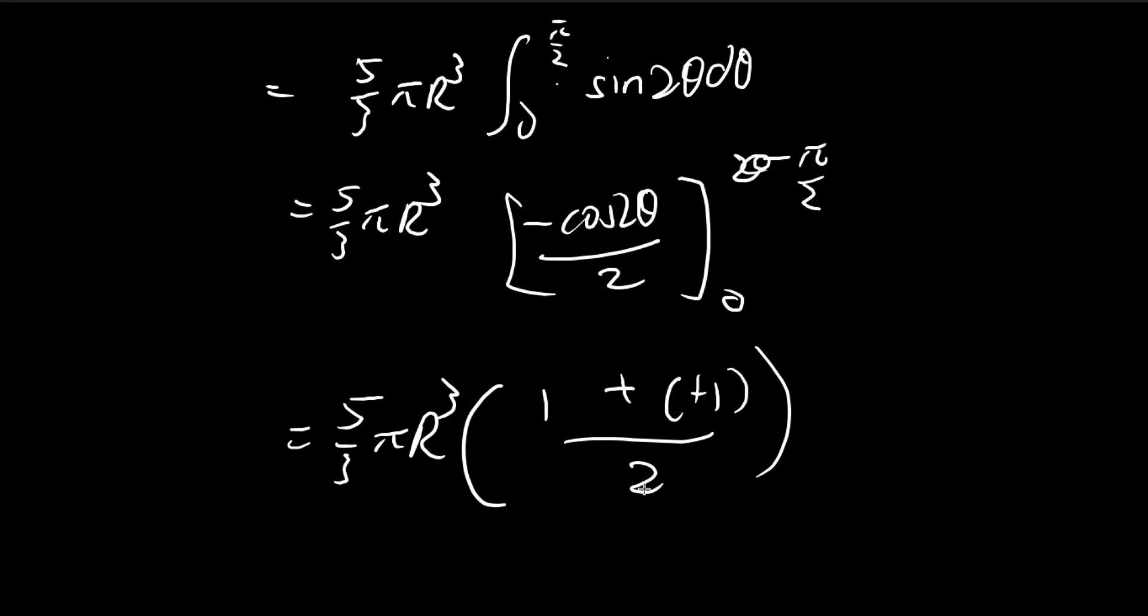So as you can see, this becomes 2 over 2, this becomes 1. So the answer is 5 over 3 pi r to the power 3. So this is the answer for the volume integral of the divergence. So for the next step, we'll have to check the surface integral.